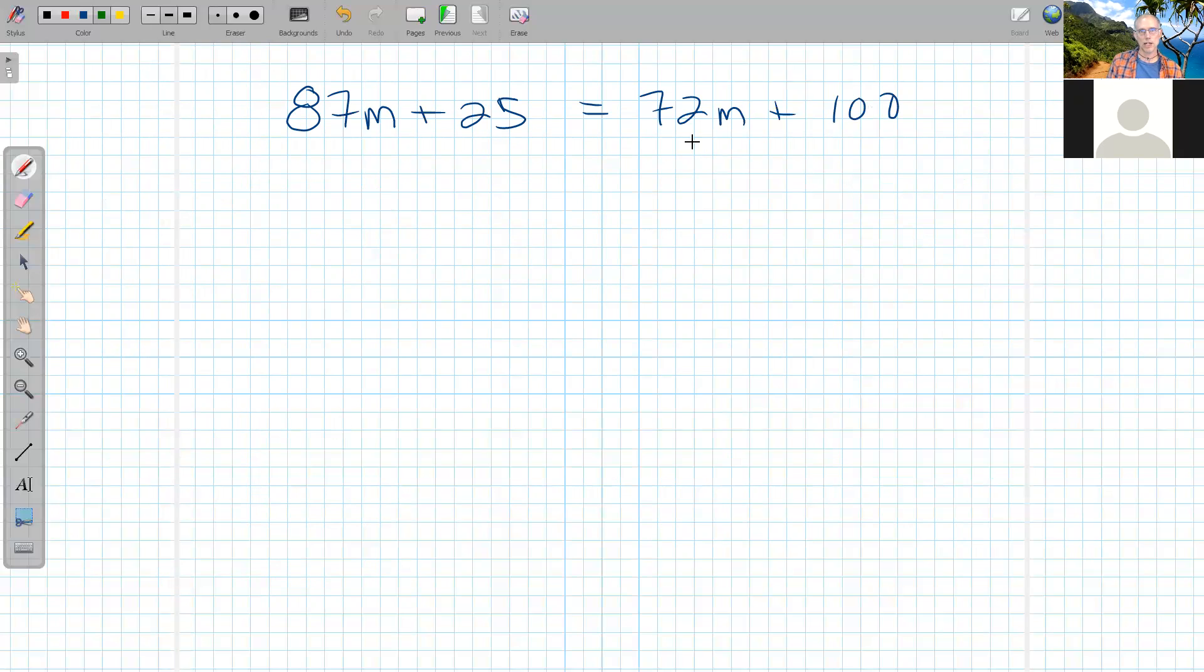I'll start by subtracting 25 from both sides. Since it doesn't have an M, it pairs with the 100. So 25 minus 25 is 0, leaving 87M on the left. On the other side, I have 72M plus 100 minus 25, which is 75. Now I'll take the 72M to the left to get the M's together, so I'll subtract it from both sides.